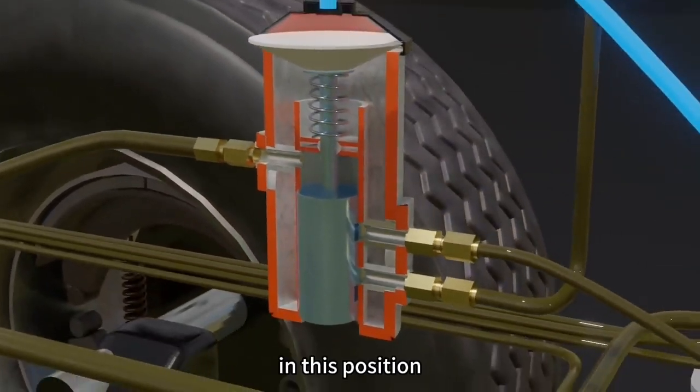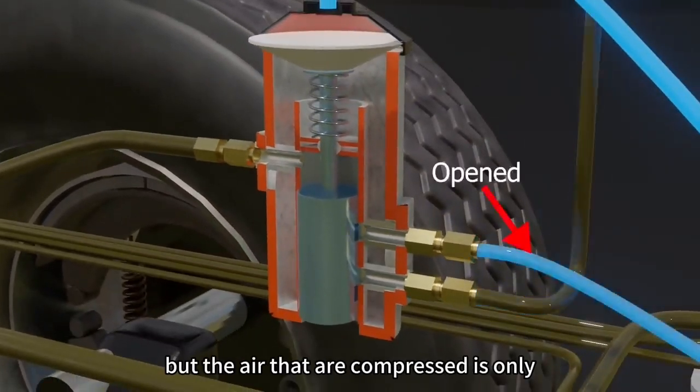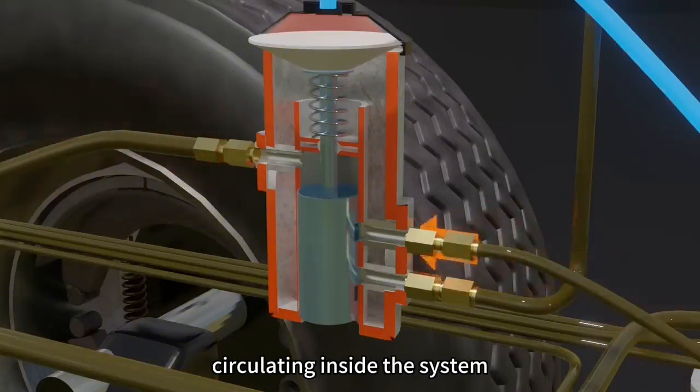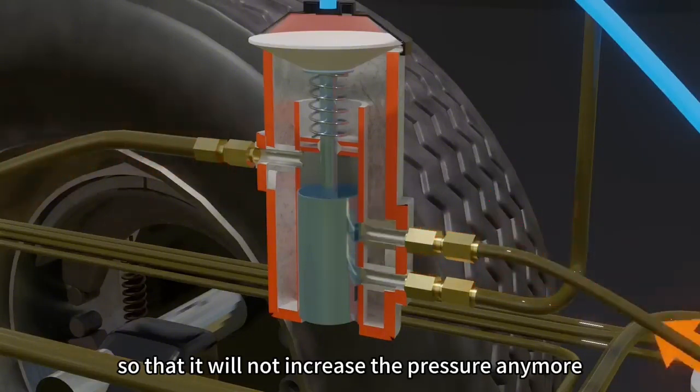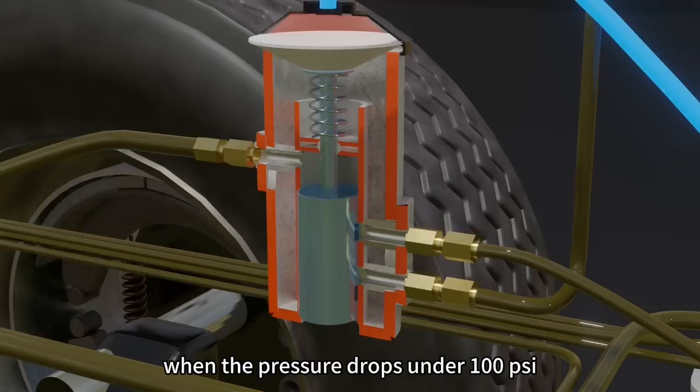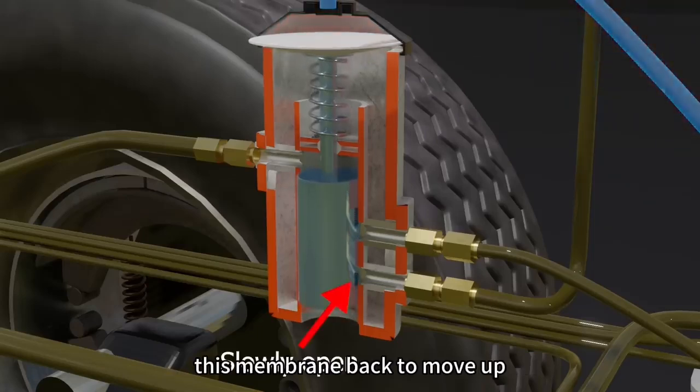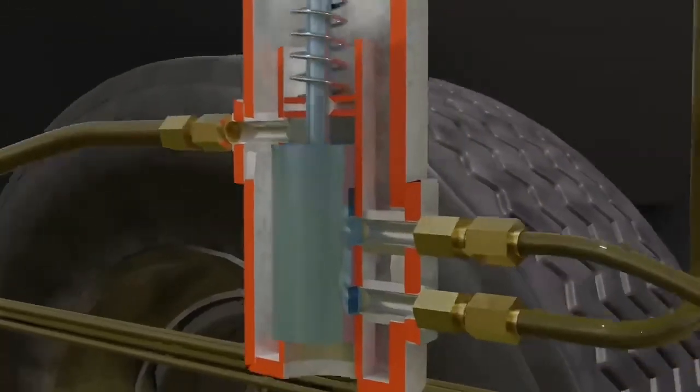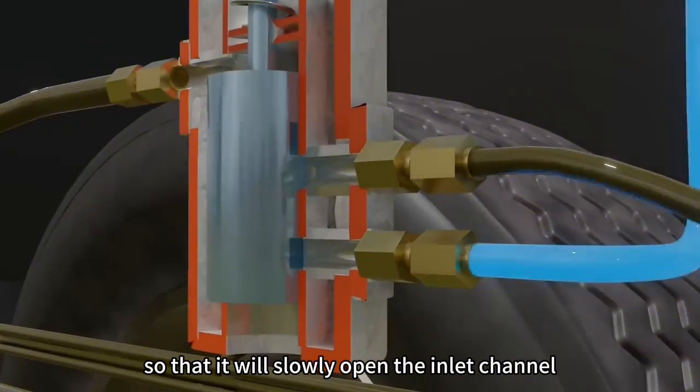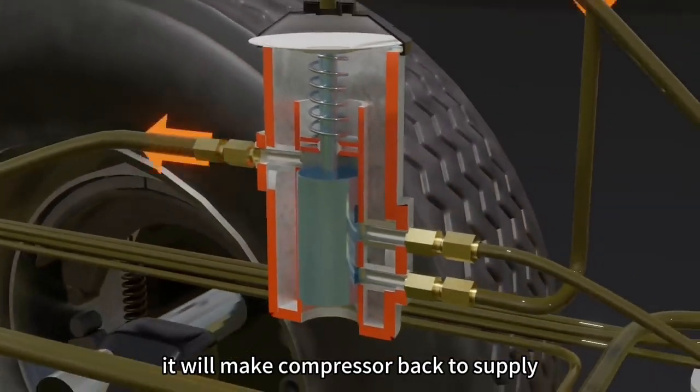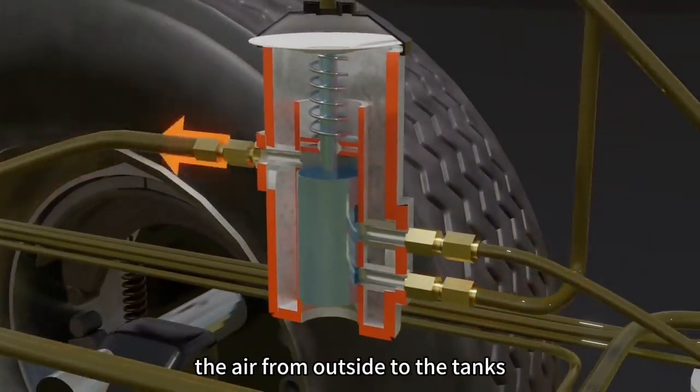In this position, air compressor is still operating, but the air that is compressed is only circulating inside the system, so it will not increase the pressure anymore. When the pressure drops under 100 psi, this membrane moves back up, so it will slowly open the inlet channel. It will make compressor supply the air from outside to the tanks again.